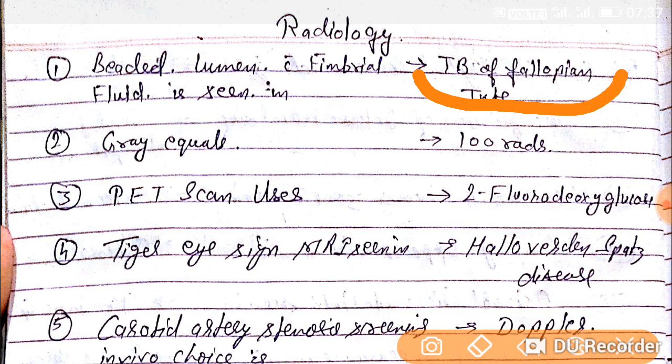Question number second. Gray equals to 100 rads — one gray equals to 100 rads.